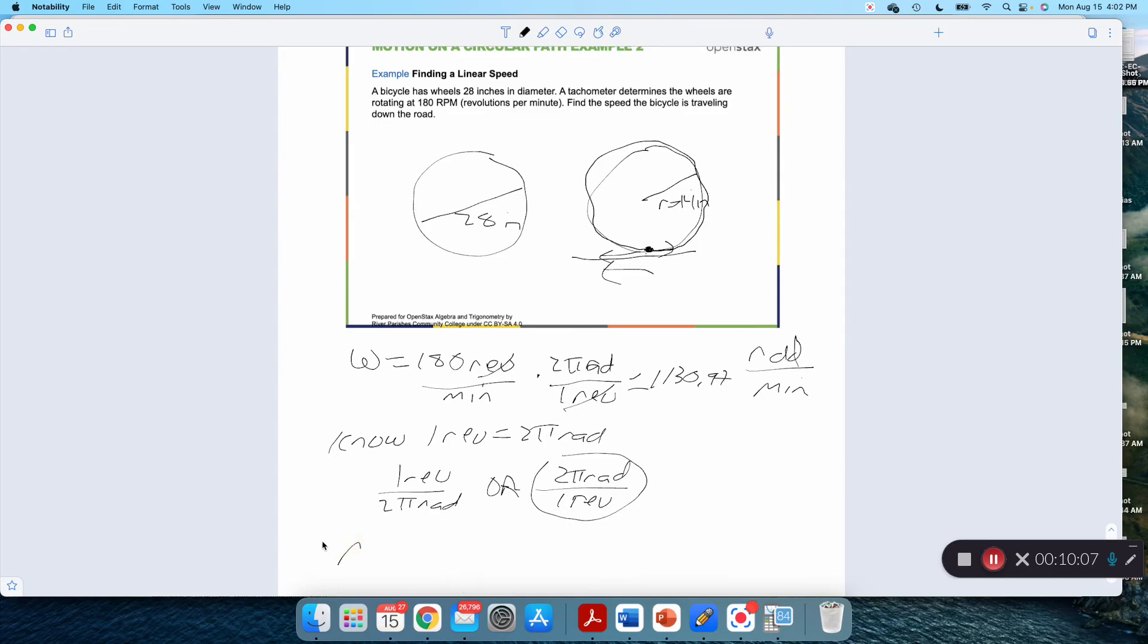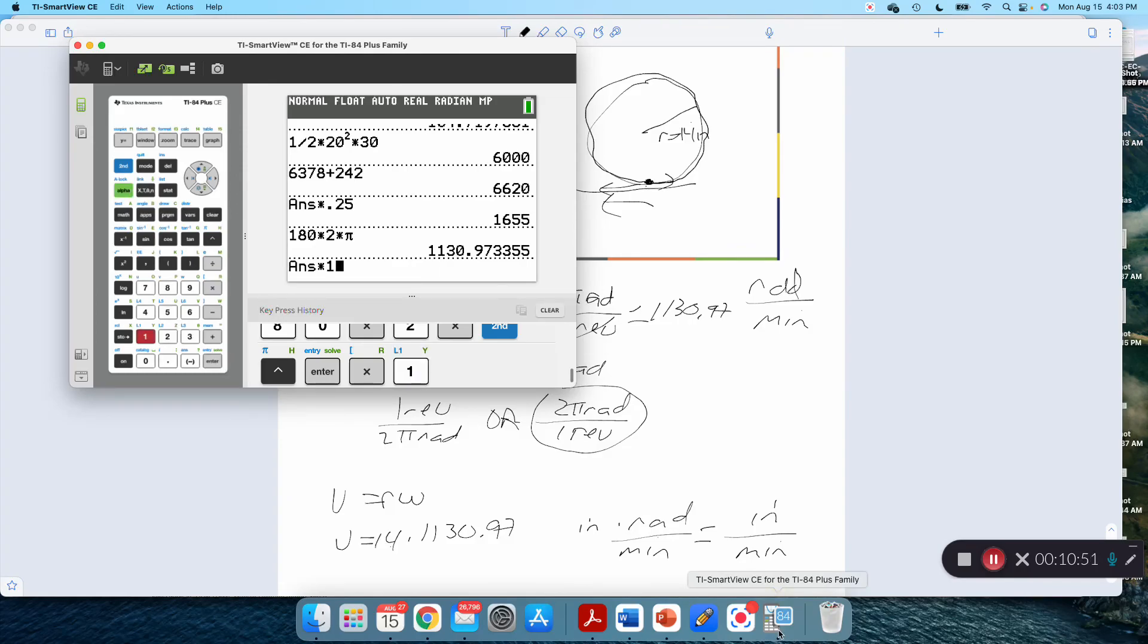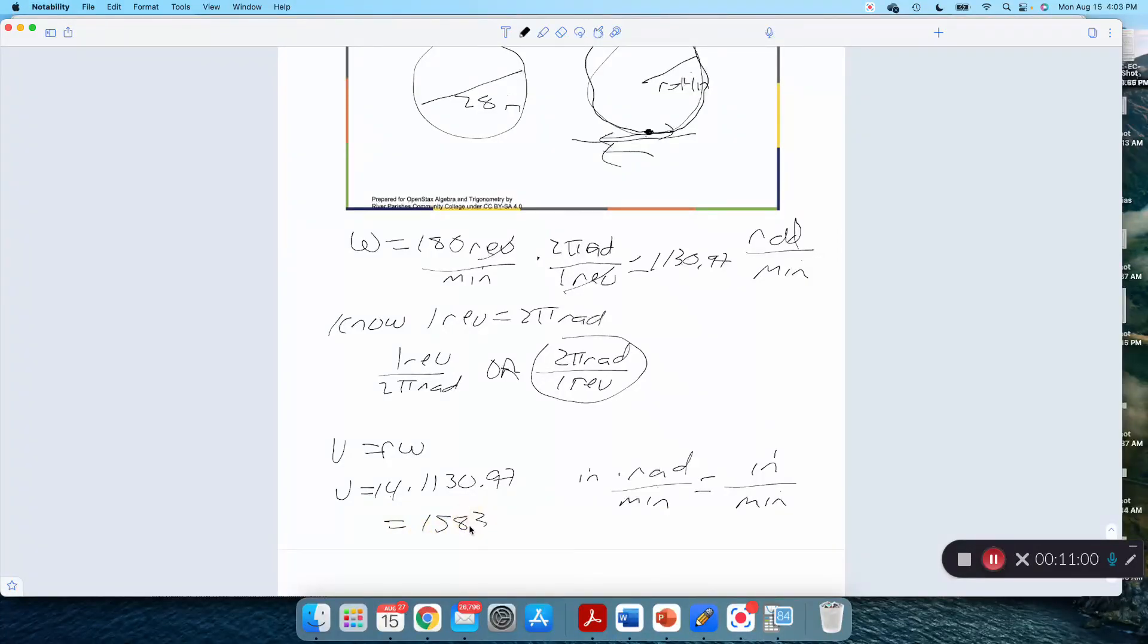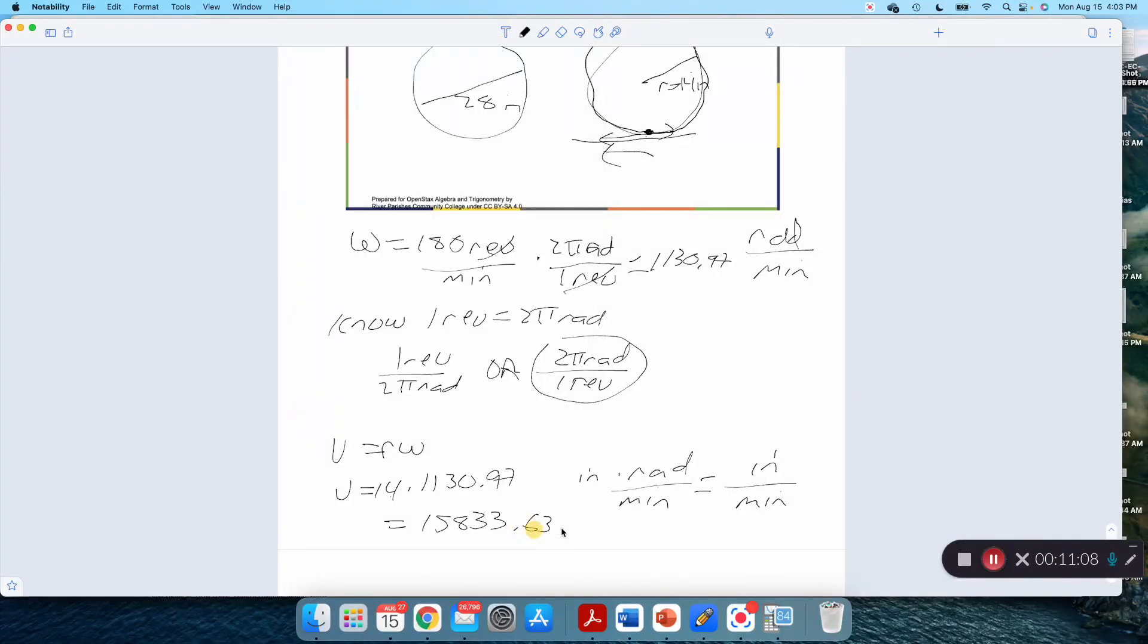Because the tire is moving around at that linear speed traveling down the road. So V just equals R omega. So V here will be R, 14, times that omega 1130 point 97. That was in, let's look at our units here. R was in inches times radians per minute. Radians are unitless. We can just ignore radians. My answer here is going to be in inches per minute. So I just take that last answer times 14, 15833 point 63 if we round to two places, inches per minute.